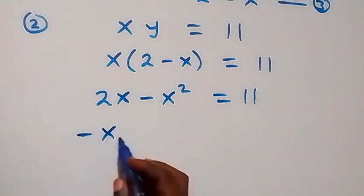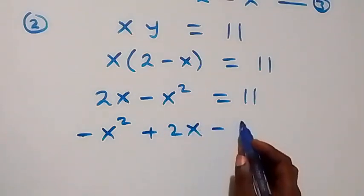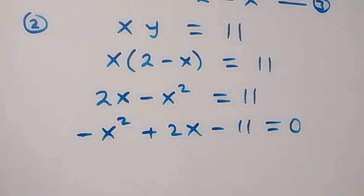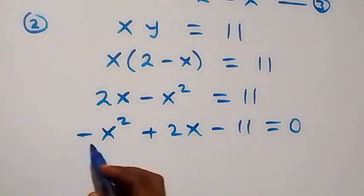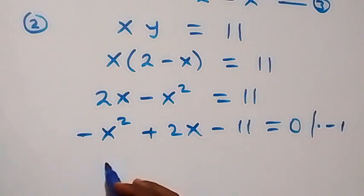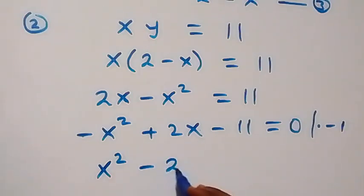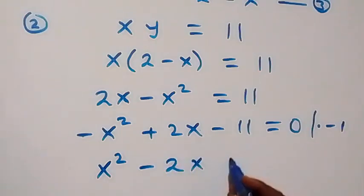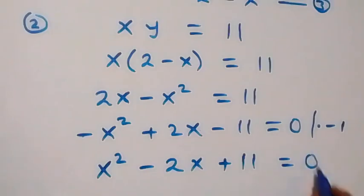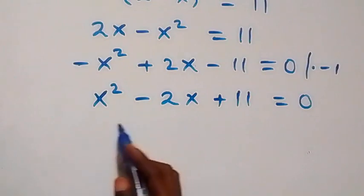That equals to 11. We rearrange and take 11 to this side, so this becomes minus x squared plus 2x minus 11 equals to zero. Let's remove this minus by multiplying through by minus 1, then this becomes x squared minus 2x plus 11 equals to zero.